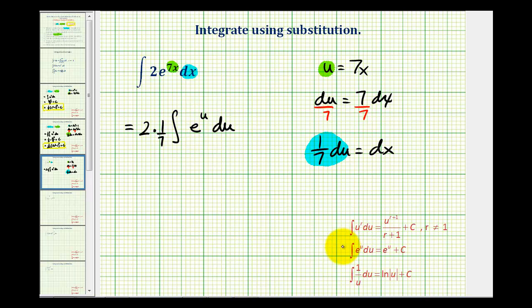Now we just need to integrate e to the u with respect to u, which is given here. So here we'll have 2/7ths, and the anti-derivative of e to the u with respect to u is just e to the u plus c.